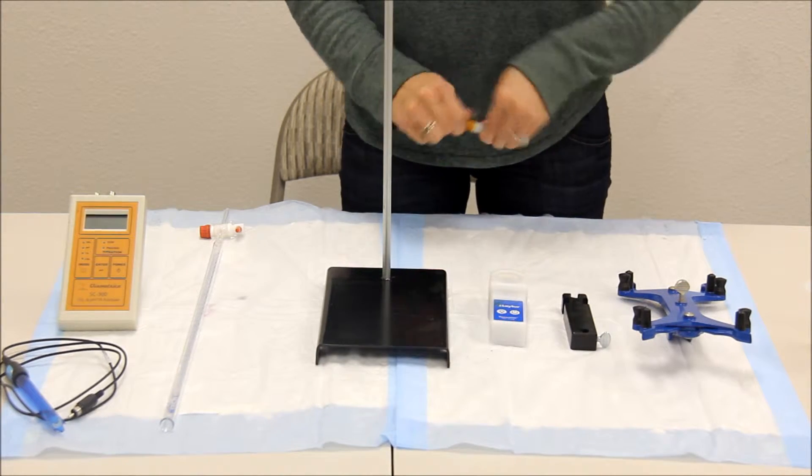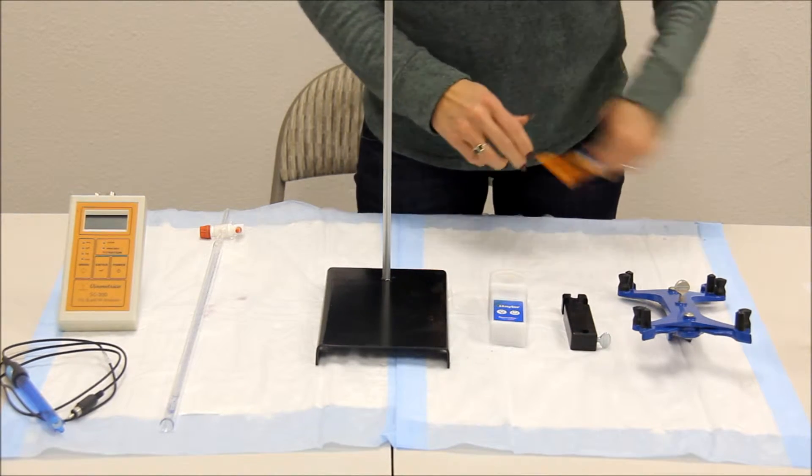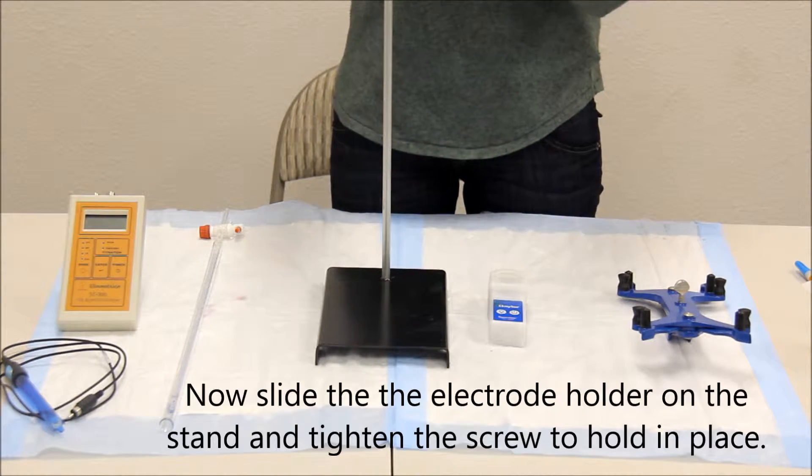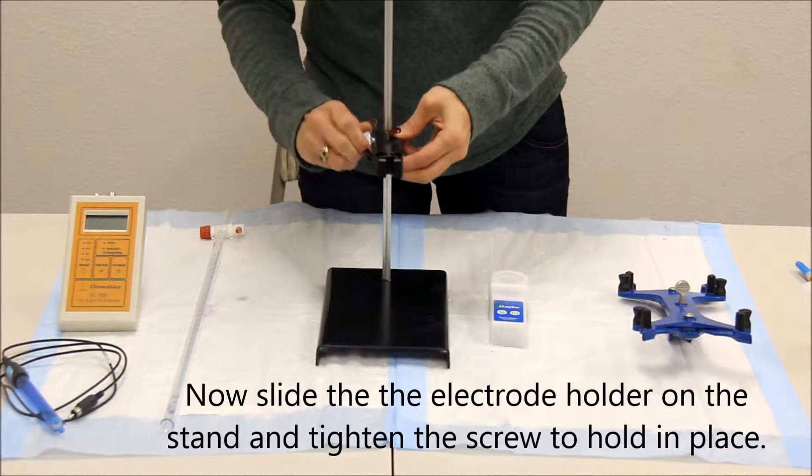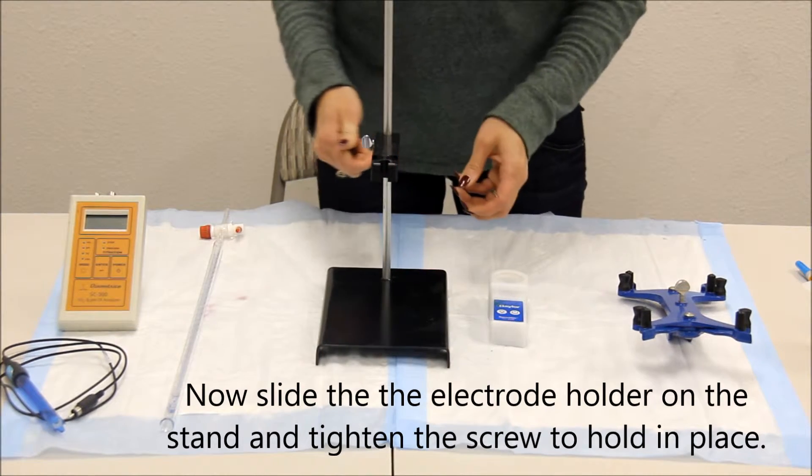You will now place the electrode holder and tighten to clamp down.